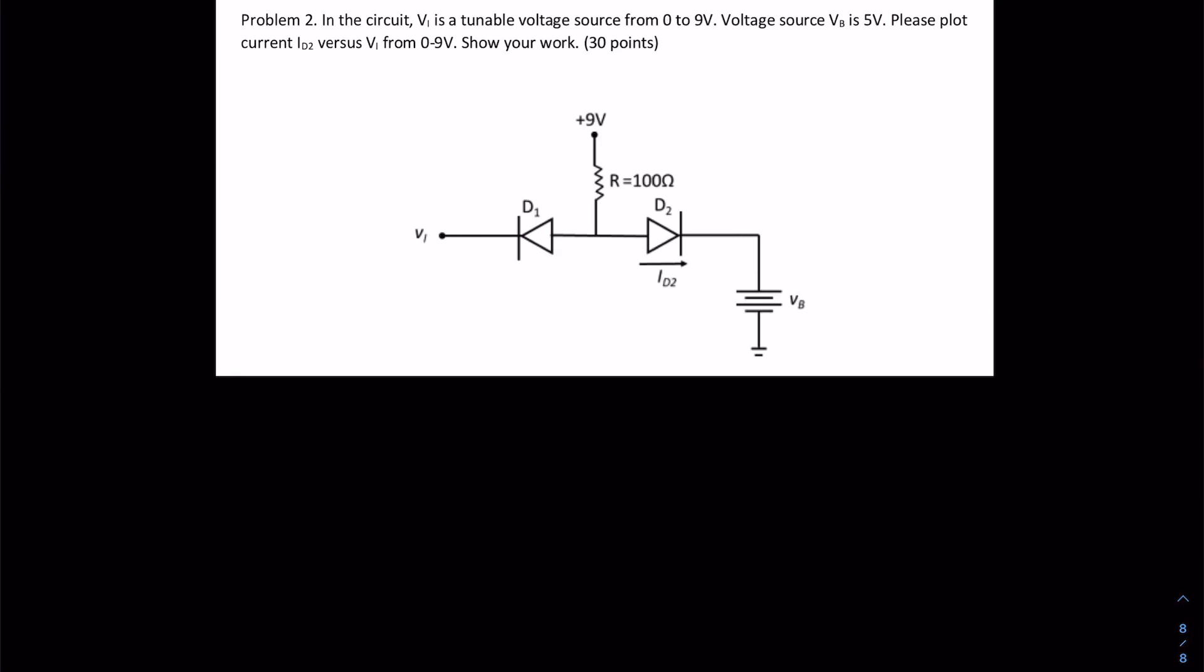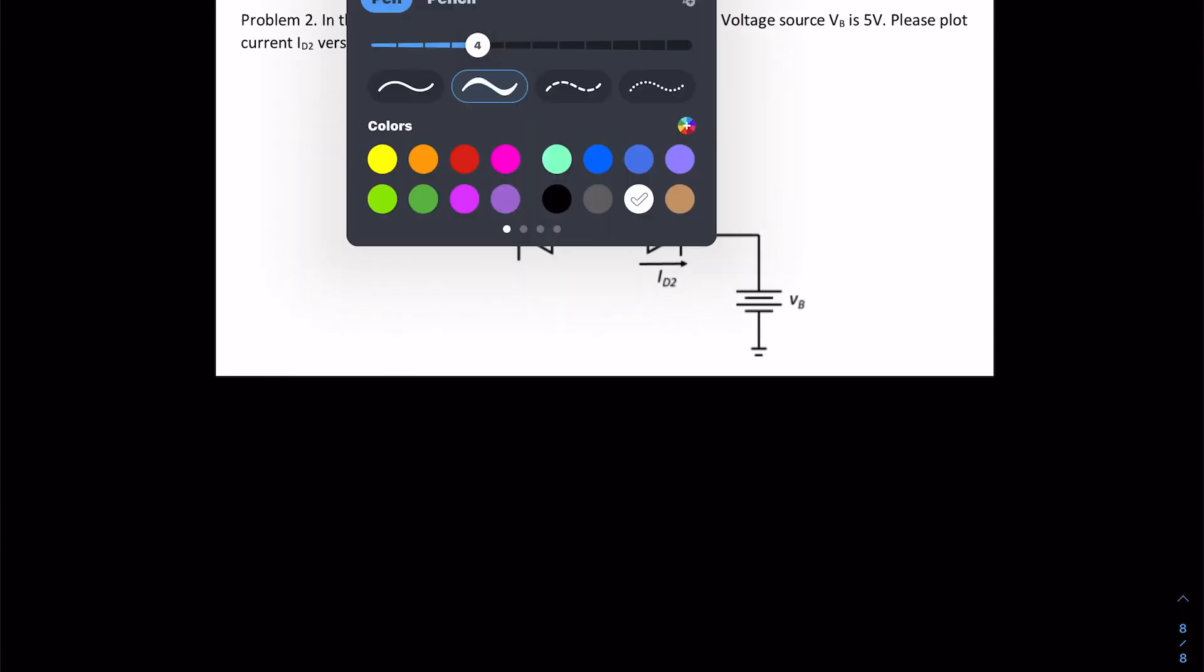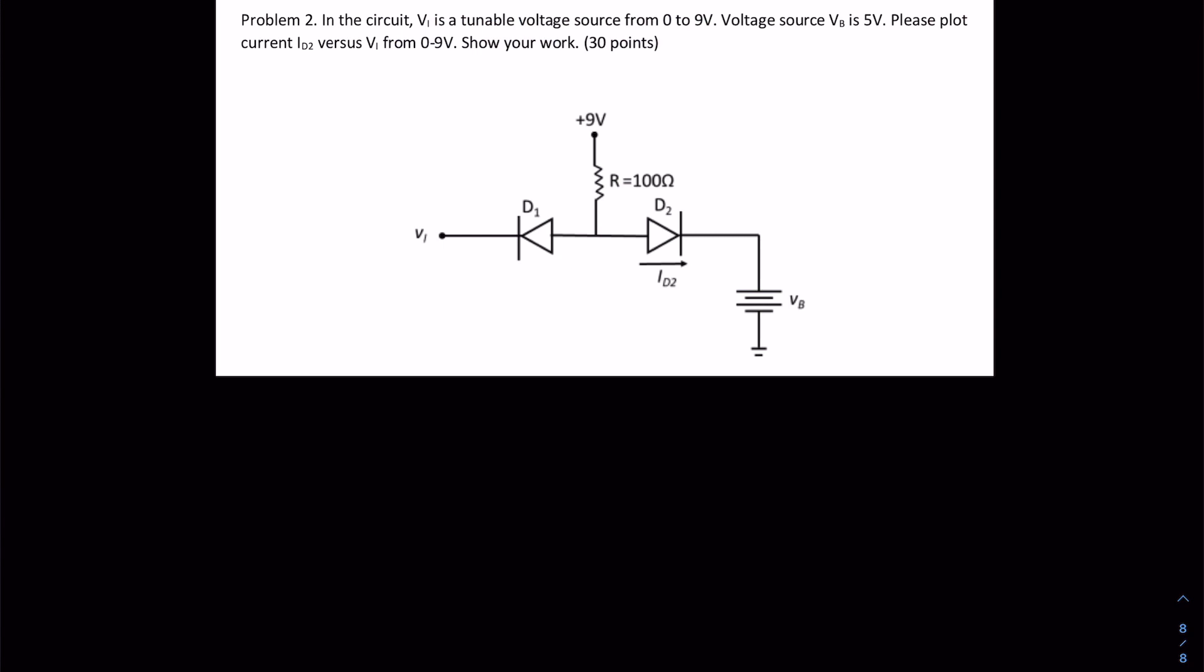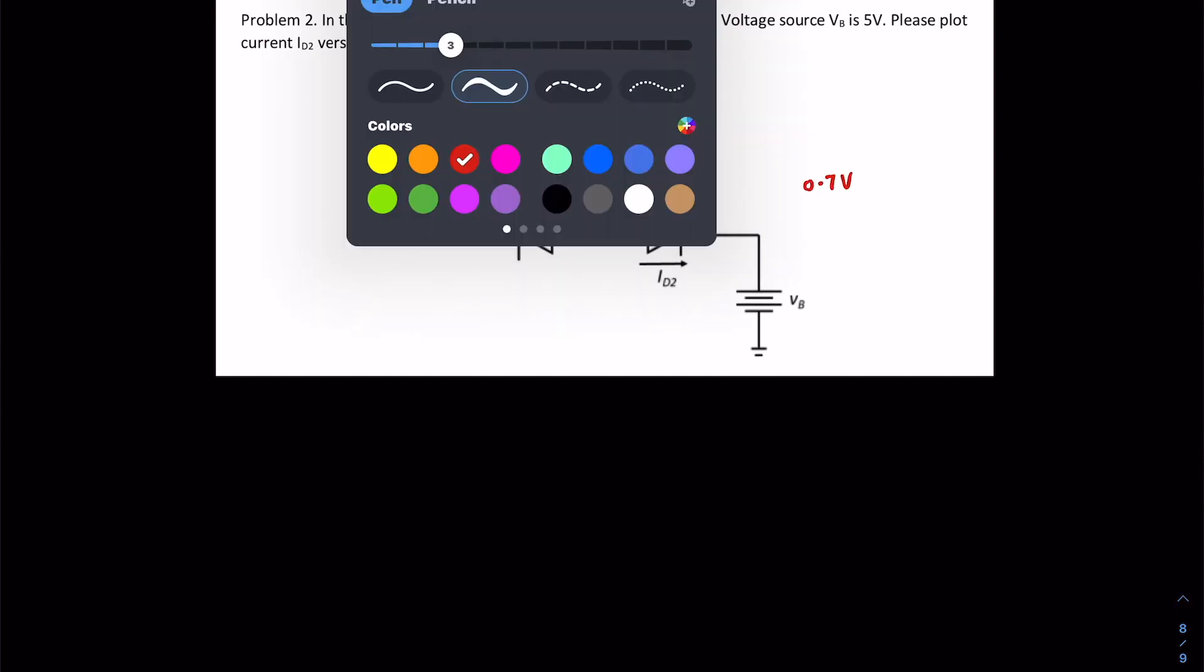This is another basic diode problem. It is asking to find the diode current flowing through diode D2. This is a little bit tricky question. Let's assume whenever a diode is conducting, its forward voltage drop must be 0.7 volts. This is assumed because most of the time for a silicon diode it will be 0.7 volts.